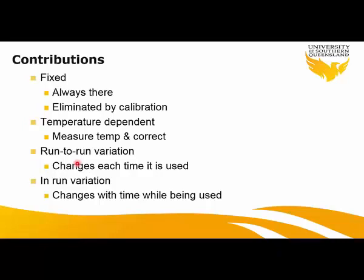Run-to-run variation is unfortunately not something you can fix through calibration, because it changes every time you switch on the instrument. It can be estimated and corrected using a startup procedure that we will discuss later. In-run variation changes over time while you are using the device, and there is no way to correct it through initialization or calibration — it can only be addressed by integration of IMU and GNSS.